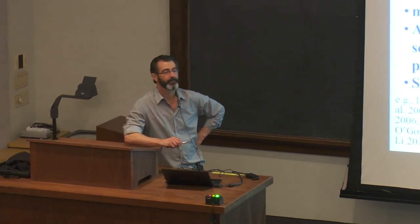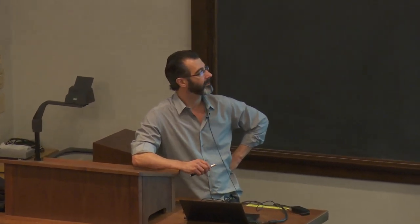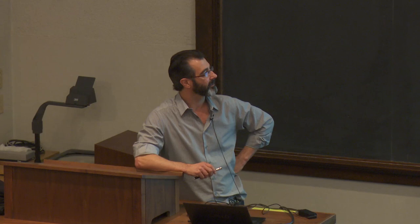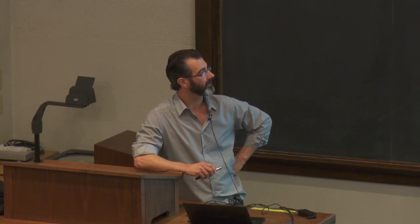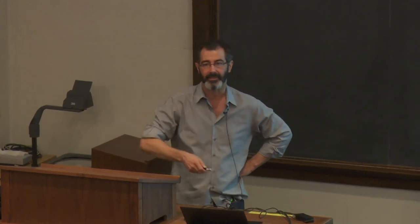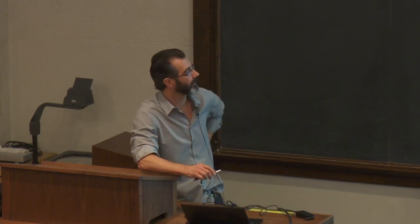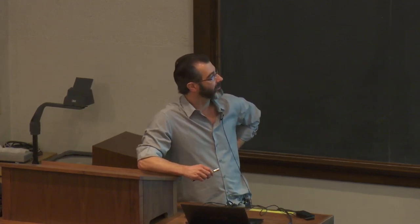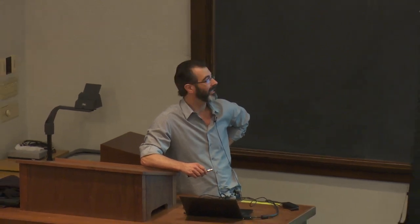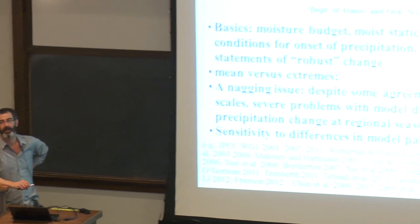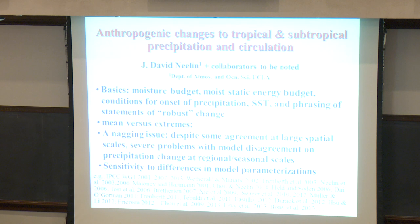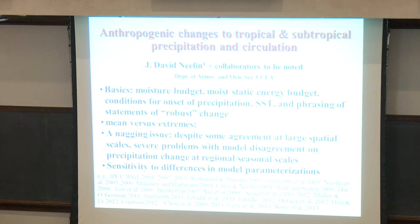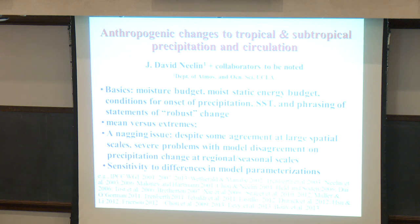I'm going to start with a review of some basics, including some things on the moist static energy budget, which Bill introduced earlier, and a reminder of a few things about the conditions for onset of precipitation and how these tend to get forgotten in some of the simplest explanations for precipitation change under global warming. I also hope to set the stage for dialogue with a talk by Shangpeng Xie later this afternoon.